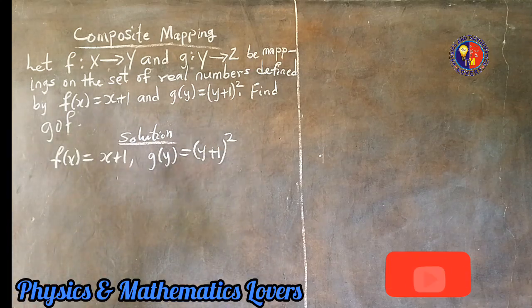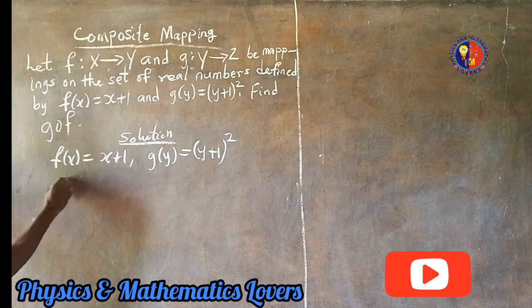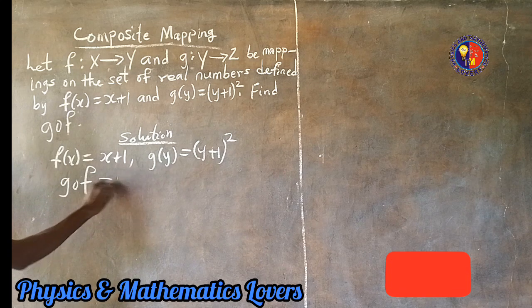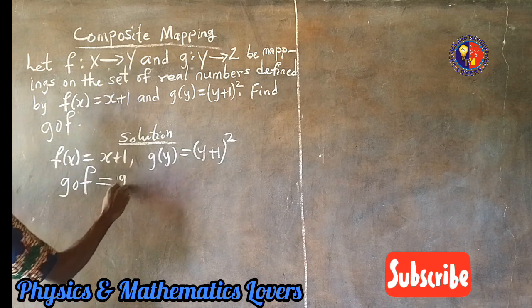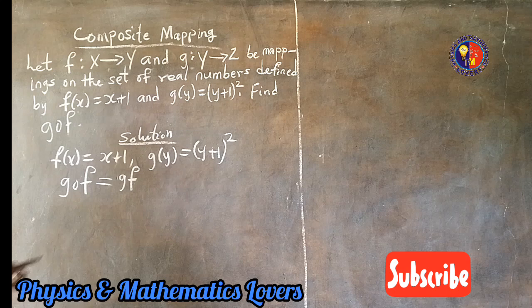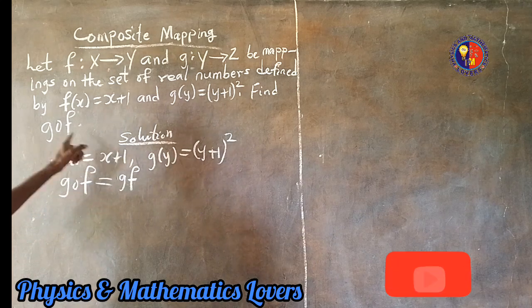Remember I told you that g∘f is the same thing as gf. What this means is that gf now, g∘f or gf, it means that we are going to have f(x). Now f is defined on the set of real numbers here in this word function.